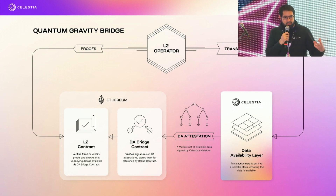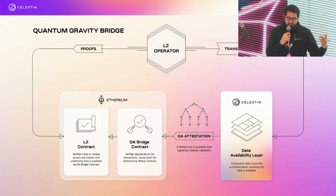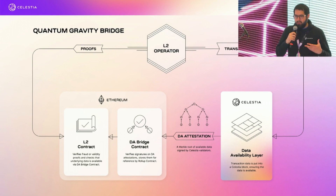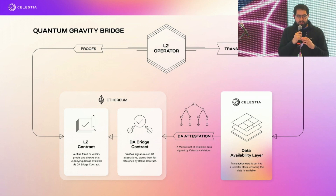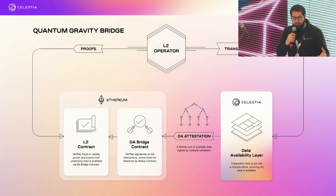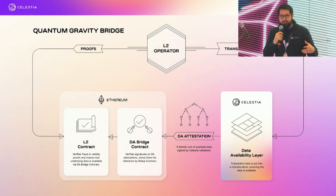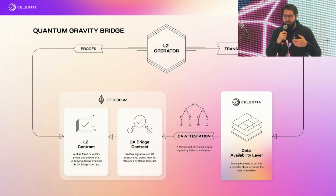Downstream rollup contracts can use this bridge contract to query for the existence of a valid attestation — essentially it's a fancy light client relay. In this scheme, rollups post their proofs to Ethereum and post their data to Celestia. The bridge contract is essentially a drop-in replacement for a data availability mechanism. Traditionally, rollups either post their data directly to Ethereum, or they use a technique called Validium, where data is kept off-chain but a data availability committee attests to its availability.